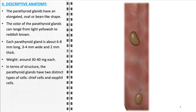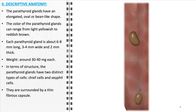Structurally, these glands are composed of two main types of cells: chief cells and oxyphyl cells. Chief cells are primarily responsible for the production and secretion of parathyroid hormone (PTH), which is crucial for calcium and phosphorus metabolism in the body. Oxyphyl cells, whose function is less understood, increase in number with age. The entire gland is encased in a thin fibrous capsule, which not only provides a protective covering but also integrates the glands with their surrounding tissues, including the blood vessels that supply them. This intricate structure underscores the parathyroid gland's importance in maintaining essential physiological processes, particularly mineral homeostasis.